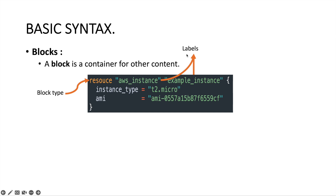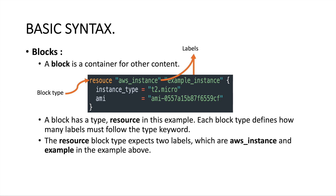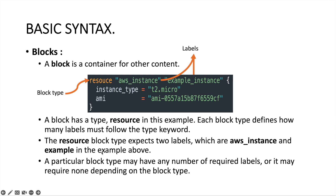The block has a type — in this case 'resource' — and each block type defines how many labels follow the type keyword. Depending on the block type, the number of labels will be decided. For a resource block we use only two labels: one is your resource type and the local label name. The resource block type expects two labels — one is aws_instance and the other is the example name. A particular block type may have any number of required labels, or it may require none, depending on the block type.